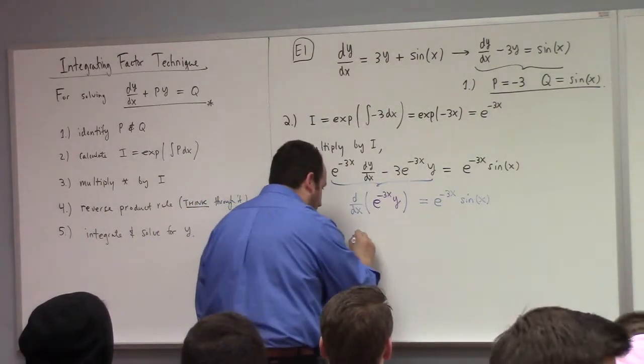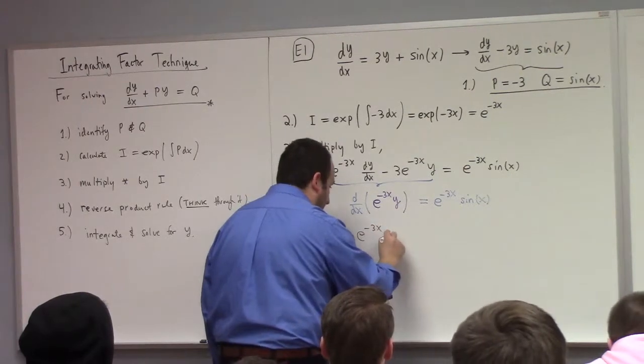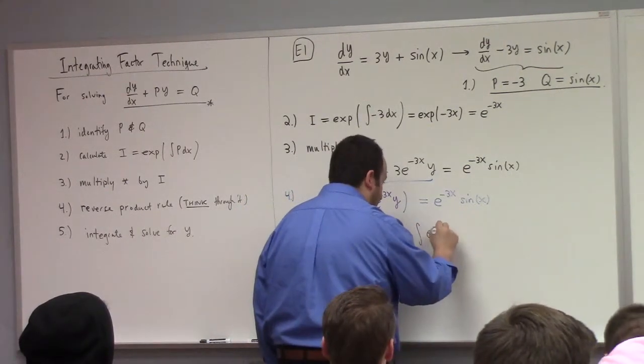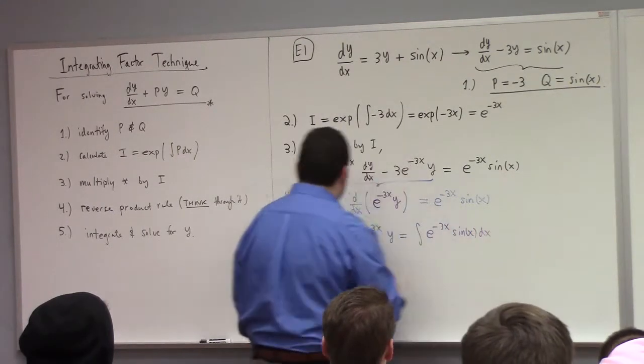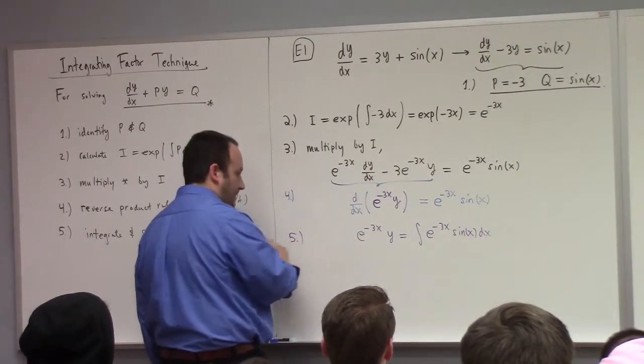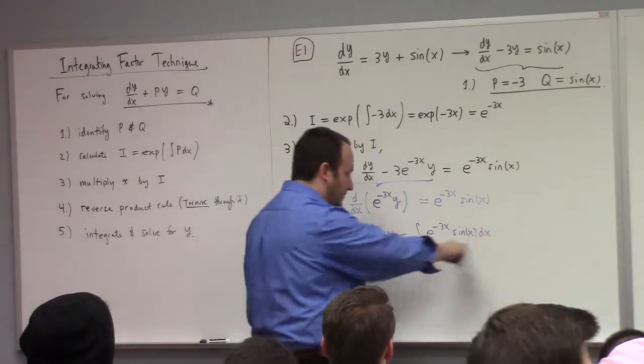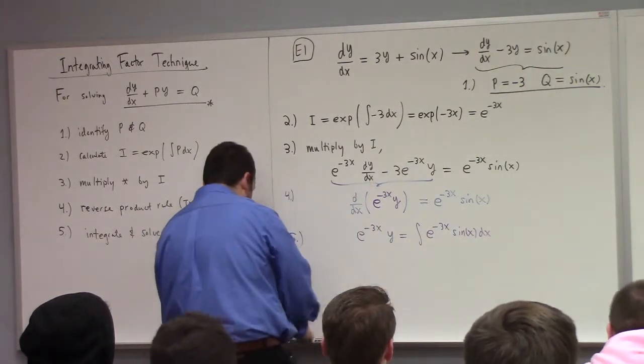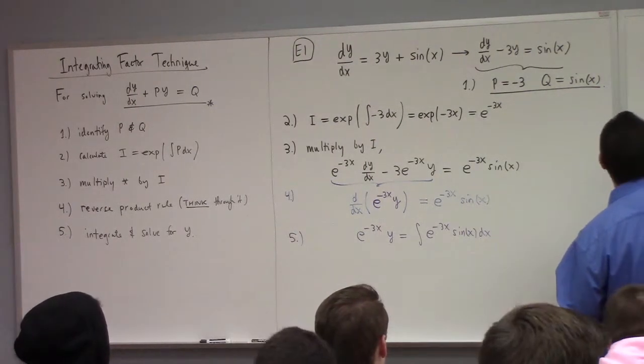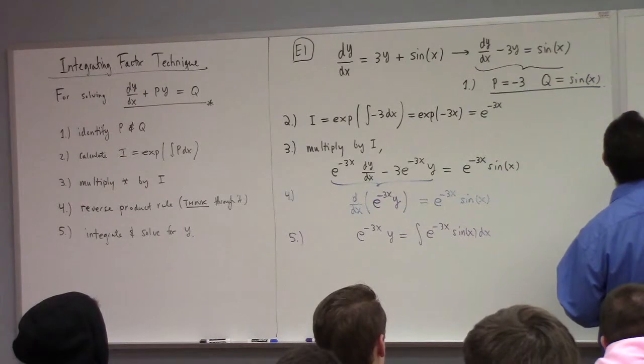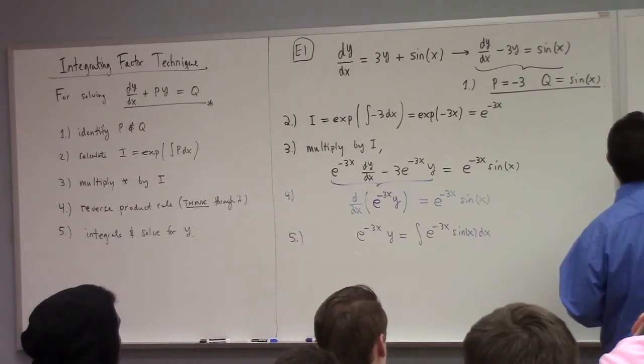Now we have to integrate both sides. So we get e to the minus 3x y is equal to the integral of e to the minus 3x sine x dx. Now this is a non-trivial integral. So I'm going to have to do that over here.